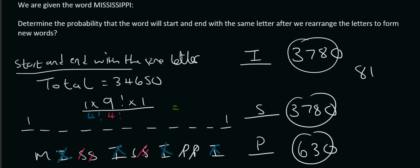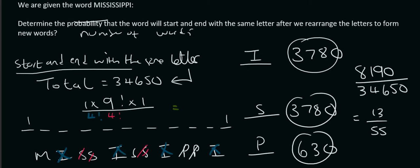And that's 8,190. So the fraction is going to be 8,190 out of a total of 34,650. And if you type that in on the calculator, you end up with a fraction of 13 over 55. So in previous videos, I might have just said, determine the number of words that will start and end with the same letter. So your answer would have just been 8,190. But now that we are busy doing probability, you must divide it by the total.